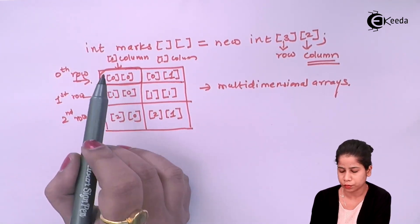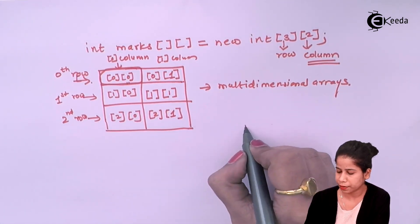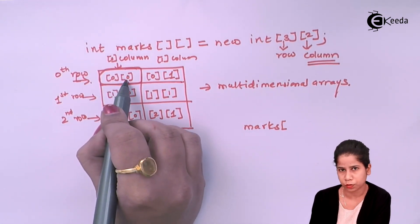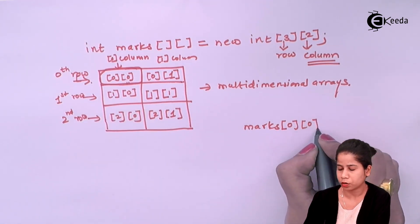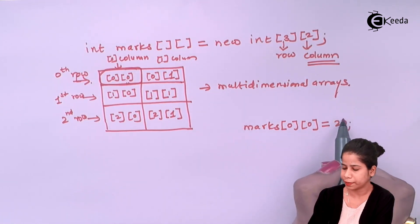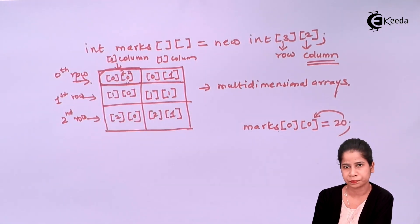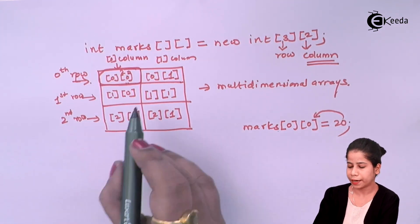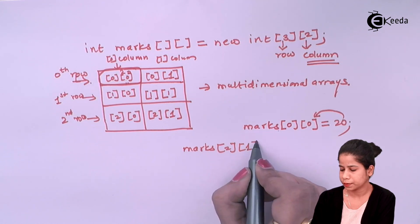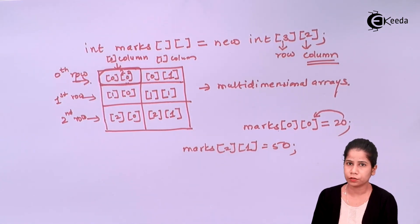If you want to store some value in a particular location of the 2D array, you use the array name marks and provide row and column. For example, marks[0][0] = 20 stores 20 at zeroth row and zeroth column. If I want to store some data at row 2 column 1, I write marks[2][1] and assign a value to it. This is the way you can make use of your multi-dimensional arrays.